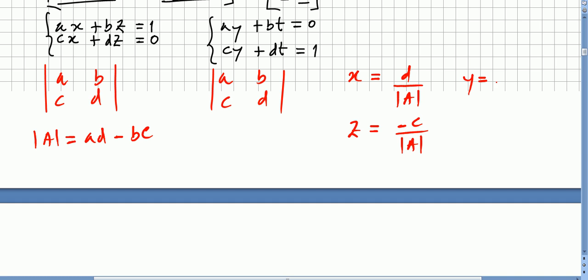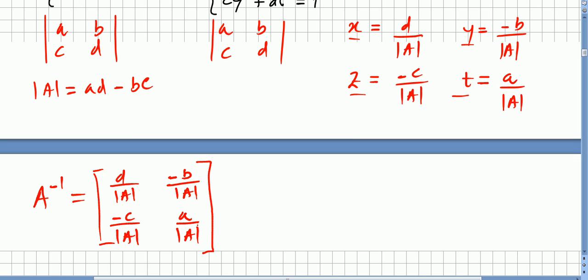And in the second system, it's more or less the same. Y will be minus B dividing the determinant of A, and t will be A dividing the determinant of A. So these entries x, y, z, and t will be the entries for our inverse matrix. So the entries of our inverse matrix will be D dividing the determinant of A, minus B dividing the determinant of A, minus C dividing the determinant of A, and A dividing the determinant of A.